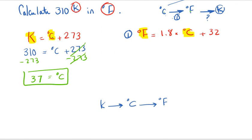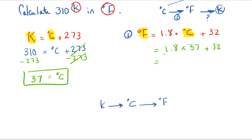Step two: convert 37°C to degrees Fahrenheit using °F = 1.8 × °C + 32. So °F = 1.8 × 37 + 32 = 98.6 degrees Fahrenheit.